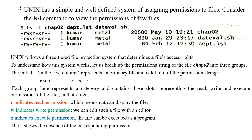The groups rwx, r-x, and r-x each represent a category and contain three slots representing read, write, and execute permissions of the file in that order. r indicates read permission, meaning cat can display the file. w indicates write permission, meaning we can edit the file with an editor. x indicates execute permission, meaning the file can be run as a program.